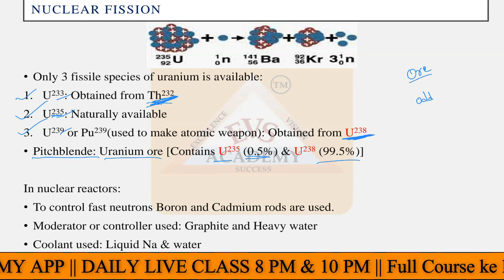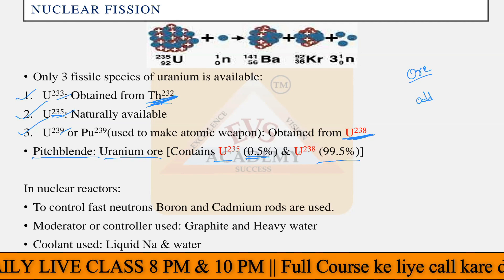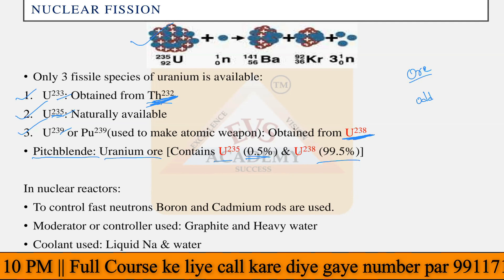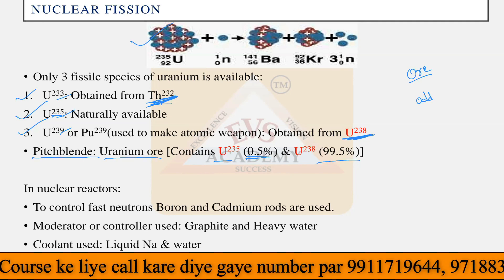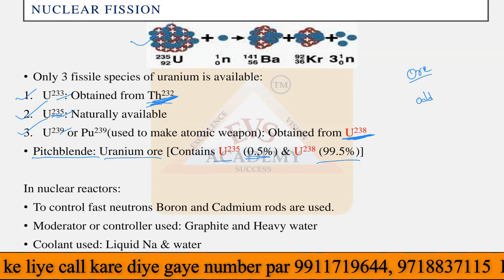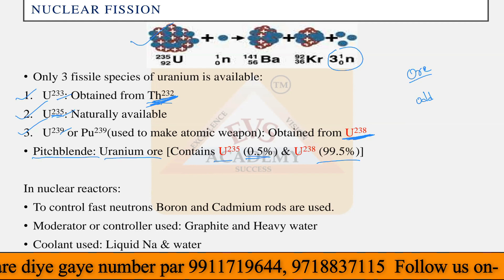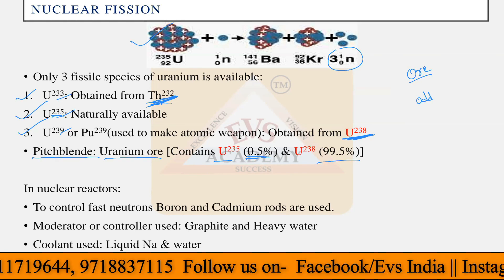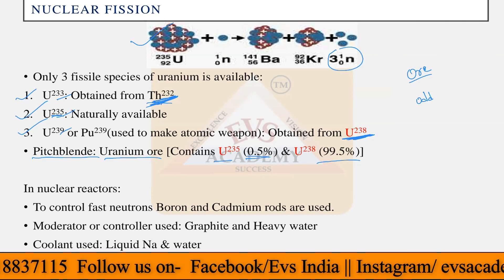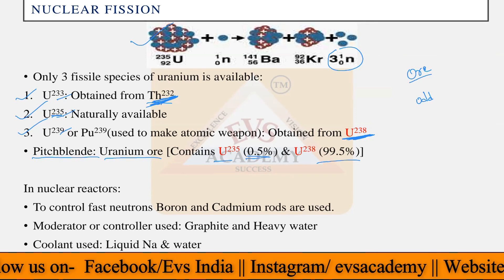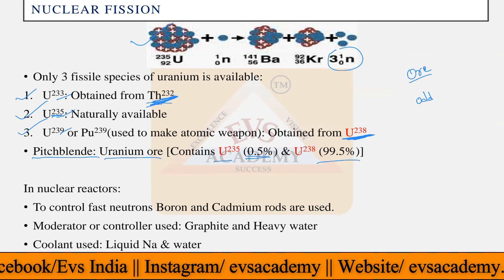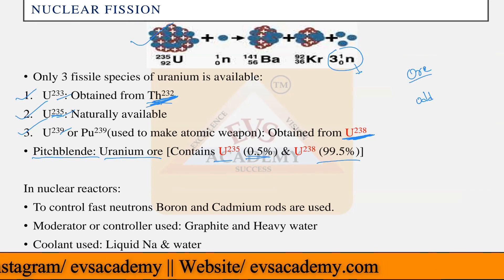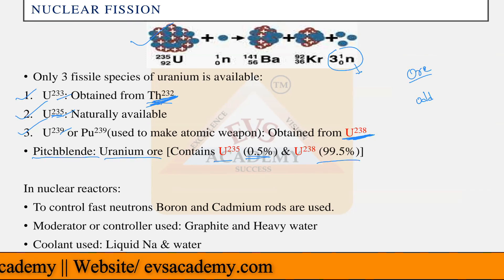Now let's talk about nuclear reactors, where the same fission reaction takes place. In a nuclear reactor, you have to control the amount of neutrons. If you control the neutrons, you can control the reaction. Introducing neutrons continues the reaction, continuously creating barium and krypton. Absorbing all the neutrons stops the reaction entirely.